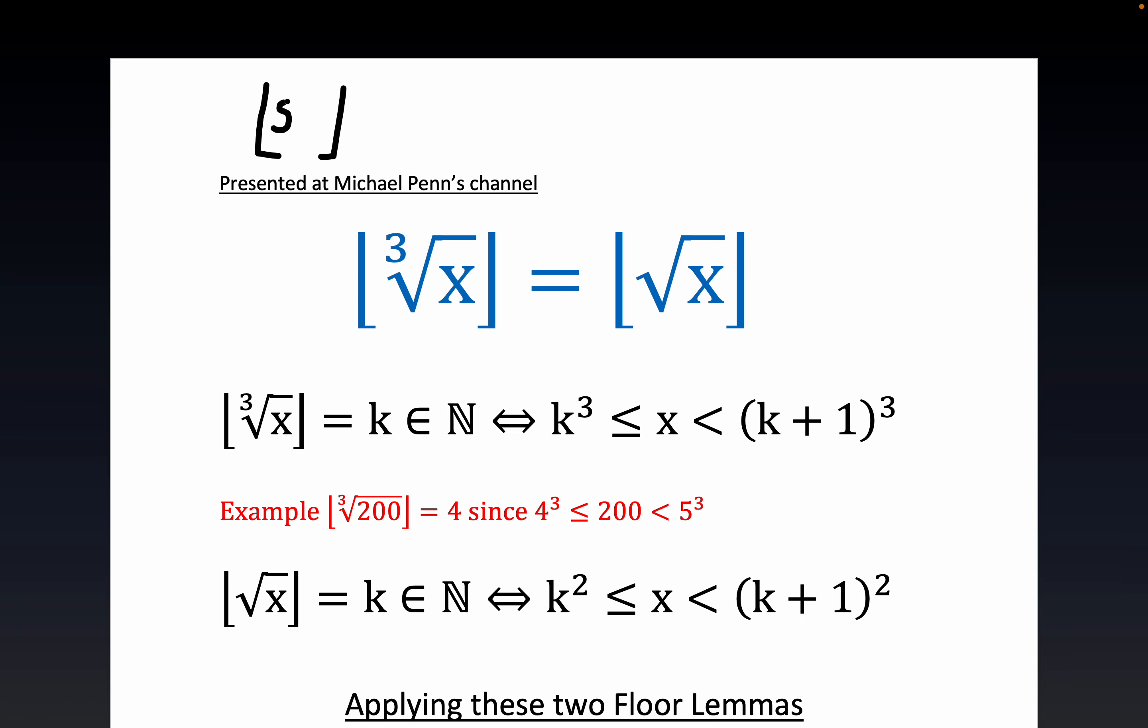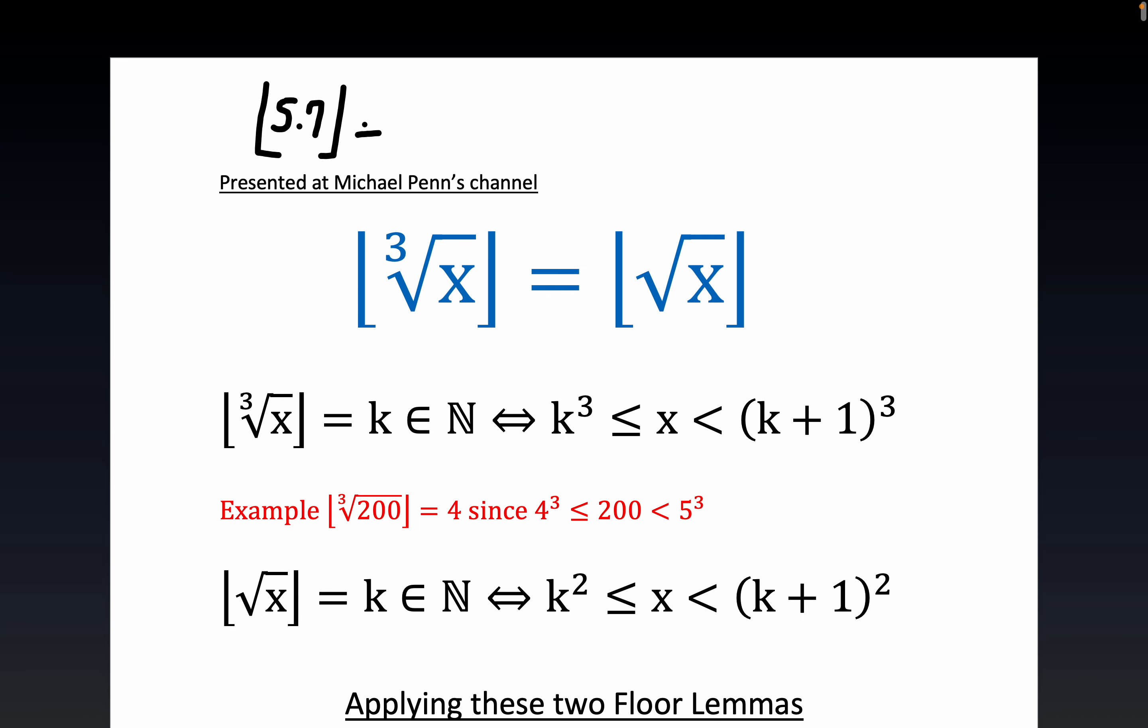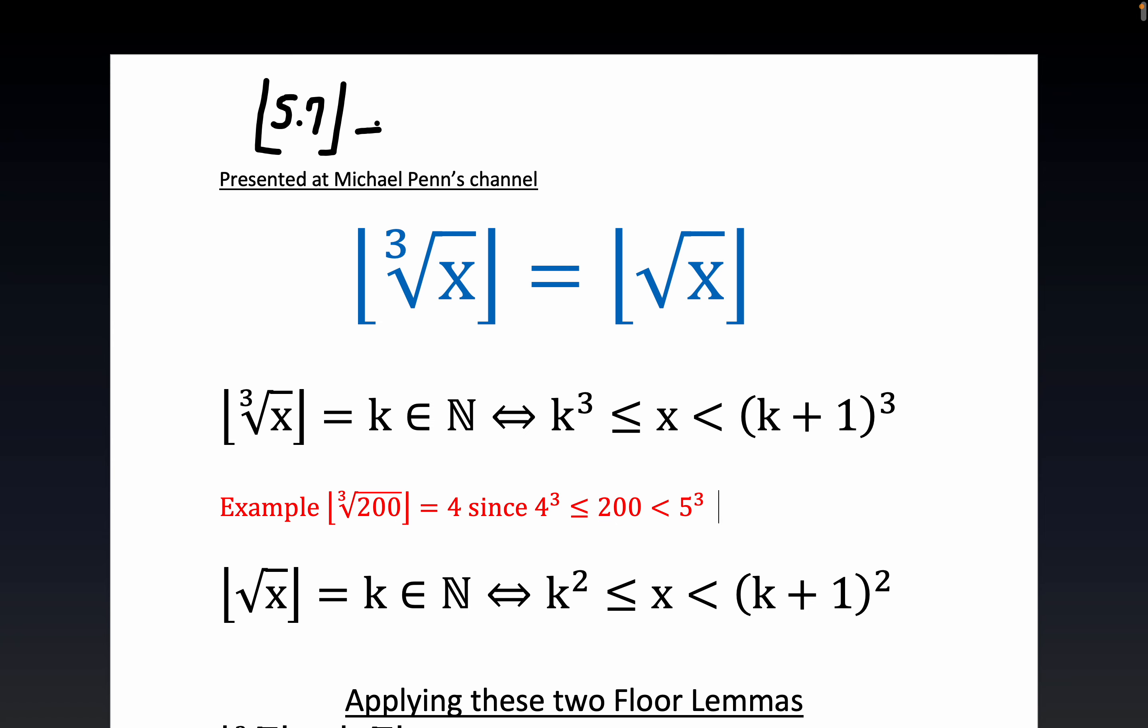Now floor function is sometimes called the greatest integer function. So we're doing the floor of 5.7 and it returns the greatest integer less than the input argument. That language is a little twisty, but let's write down what's going on here. This is equal to 5 because 5 is the greatest integer that's less than 5.7.